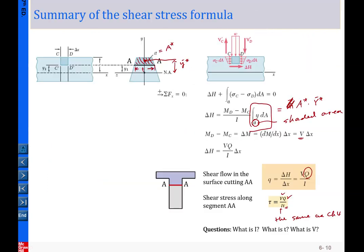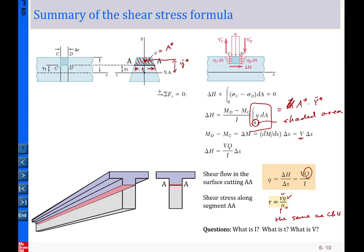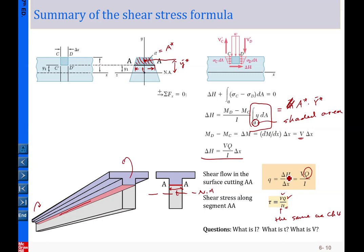Delta H equals VQ/I times delta x — the shear force in the pink strip. T is the width at that level. I is computed about the neutral axis of the entire cross section. Shear flow equals VQ/I, which is shear force per unit length. These are the two key formulas: tau = VQ/(IT) and shear flow = VQ/I.